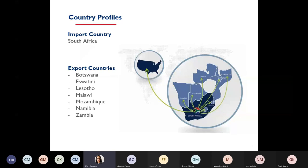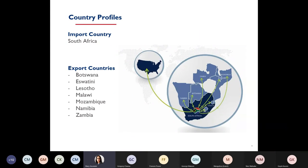For Botswana, the products we focused on were meat products, textiles, salt, and handicrafts. For Eswatini: macadamia nuts, honey, textiles, bananas, and handicrafts. For Lesotho: textiles and apparel, bottled water, medicinal plants, handicrafts, accessories, and PPE. For Malawi: groundnuts, macadamia, sugar beans, tea, and coffee. For Mozambique: groundnuts, cashew nuts, fish, specialized beans, coffee, and moringa. For Namibia: apparel, salt, olive oil, dates, raisins, and table grapes. For Zambia: medicinal plants, sugar beans, fish, honey, handicrafts, and accessories.